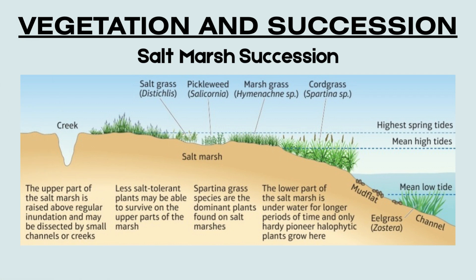Salt marsh succession, a type of halosere, is the process by which vegetation gradually colonizes and develops on low-lying coastal mudflats in sheltered estuaries or behind spits, where wave energy is low and deposition can occur. It starts with mudflats, where fine sediment is deposited by tides and rivers. At first, the area is bare and frequently flooded by salty seawater. As more mud builds up, pioneer species like eelgrass and glasswort begin to grow — these are halophytes. As the pioneers trap more sediment, the land level rises and flooding becomes less frequent, allowing other plants like sea lavender and cordgrass to grow. These species help stabilize the marsh further and improve the soil by adding organic matter.